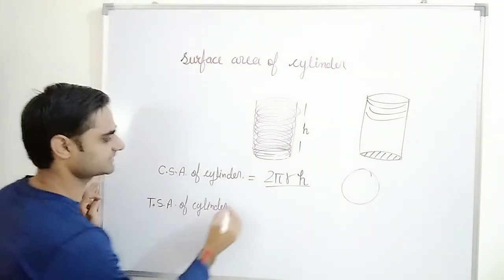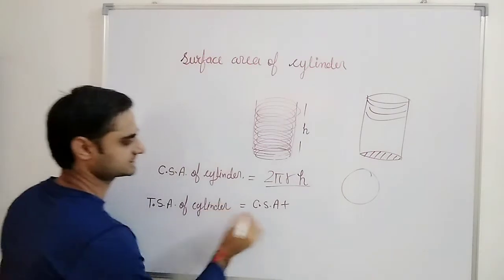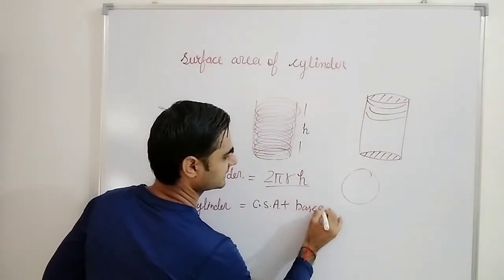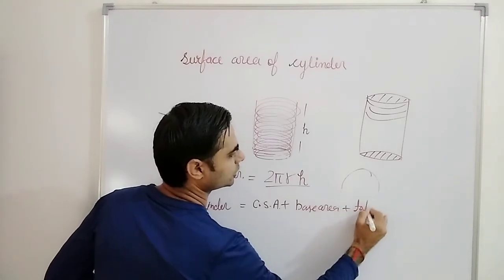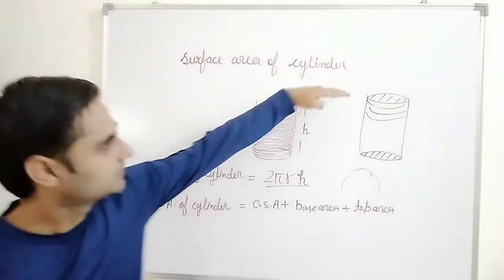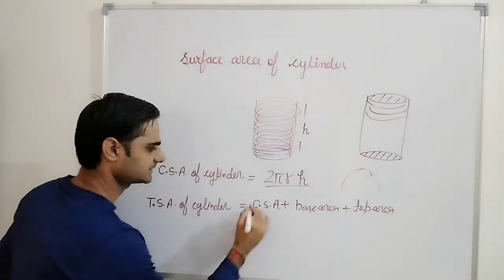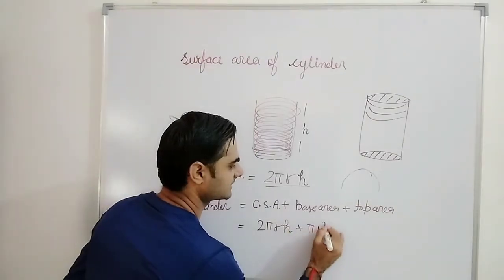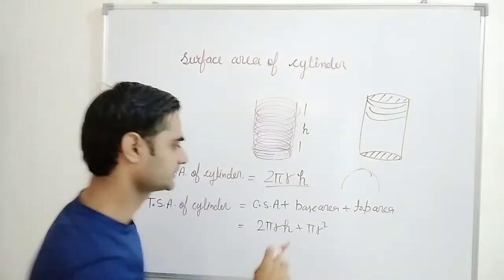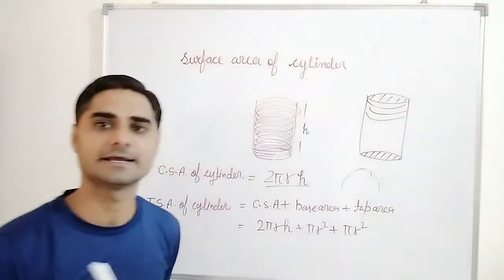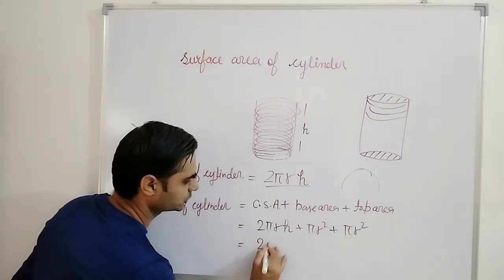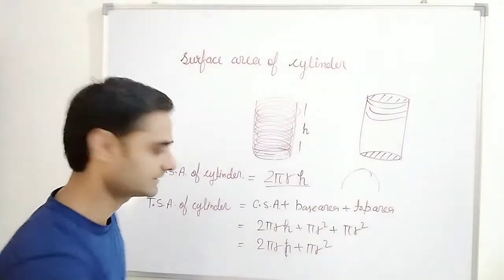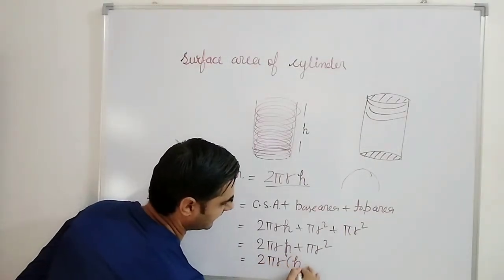Now we will talk about the total surface area of a cylinder. The total surface area will be curved surface area plus the base area and top area — these two circles. So total surface area equals 2πrh plus πr² plus πr², which gives us 2πrh + 2πr², and we can factor this as 2πr(h + r).